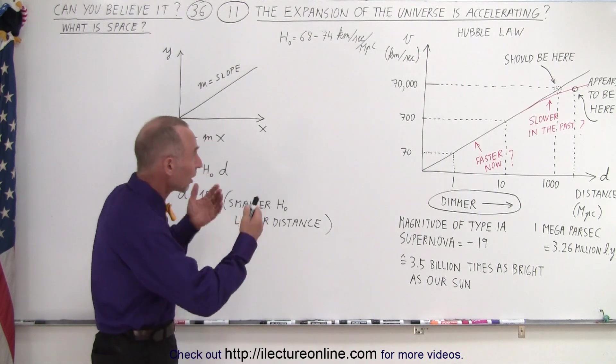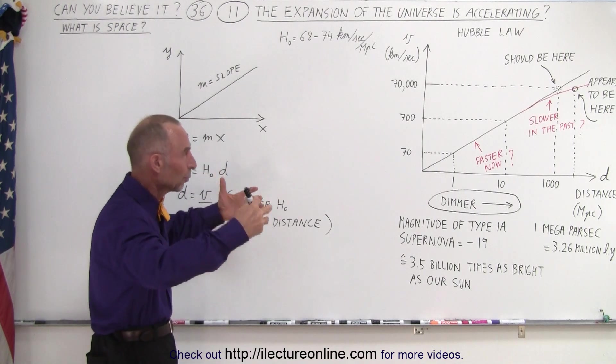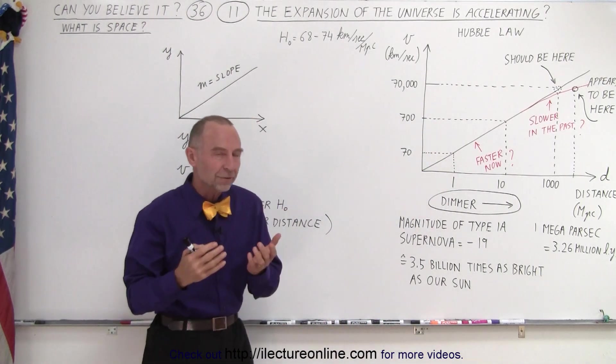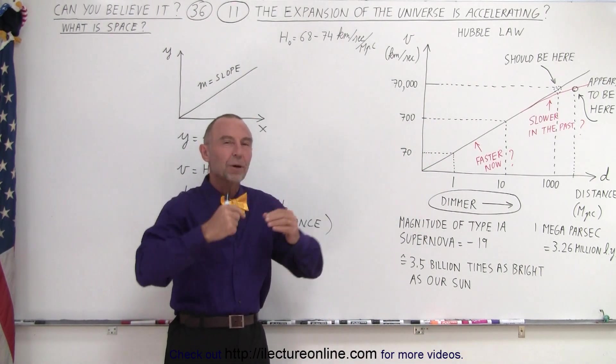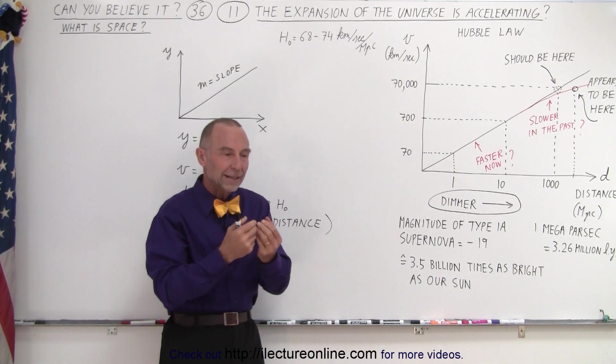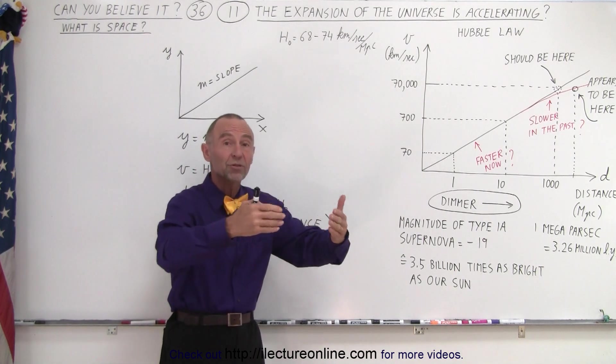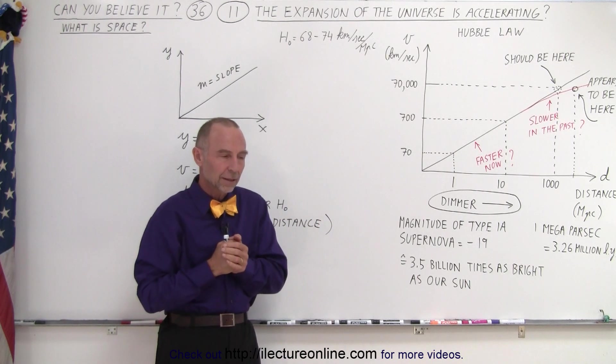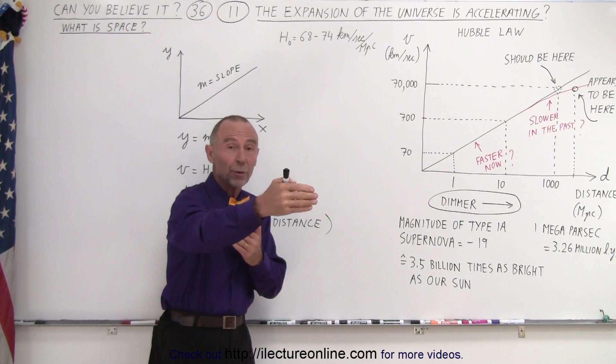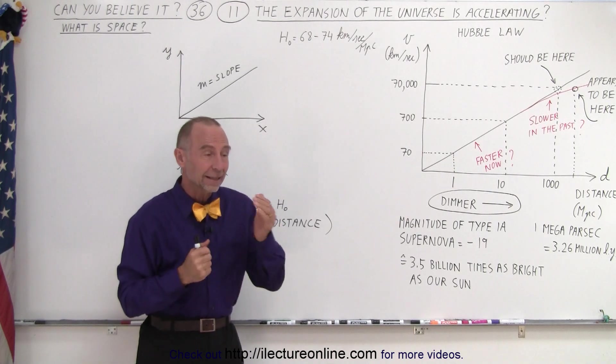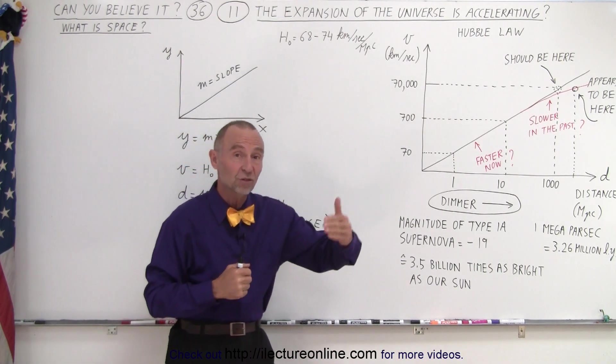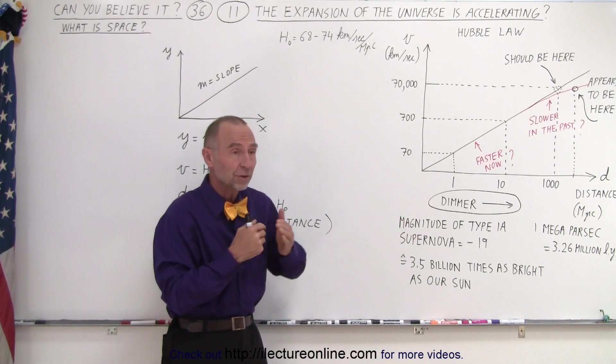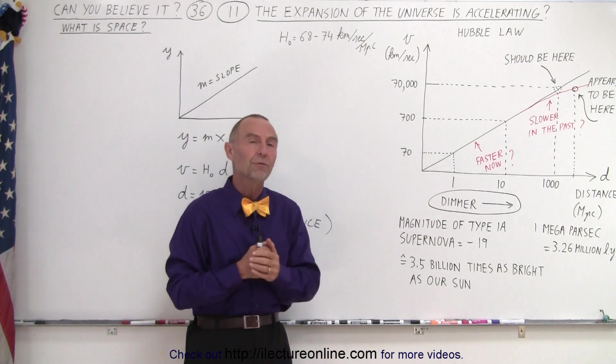When we go back to the concept of expanding space, we can return to Hubble's law. Hubble discovered that galaxies were receding away from us, and he realized that the speed at which they moved depended upon their distance. If a galaxy was twice as far away, it would be moving away at twice the speed. A galaxy three times as far away would be moving at three times the speed, and so forth.